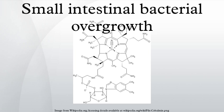Other causes include inherited immunodeficiency conditions such as combined variable immunodeficiency, IgA deficiency, and hypogammaglobulinemia. Abnormal connections between the bacteria-rich colon and the small bowel can increase the bacterial load in the small bowel. Patients with Crohn's disease or other diseases of the ileum may require surgery that removes the ileocecal valve, leading to increased reflux of bacteria into the small bowel. After bariatric surgery for obesity, connections between the stomach and the ileum can be formed, which may increase bacterial load in the small bowel.